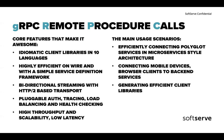gRPC has a very efficient and simple service definition. If you remember SOAP and WSDL, writing the service definition document was huge. Here, by just looking at it, you'll understand what's going on. It supports bidirectional streaming — something you won't get with REST APIs. It uses HTTP/2 for transport, has built-in auth, tracing, load balancing, and health checking, plus it's high throughput, high scalability, and low latency.